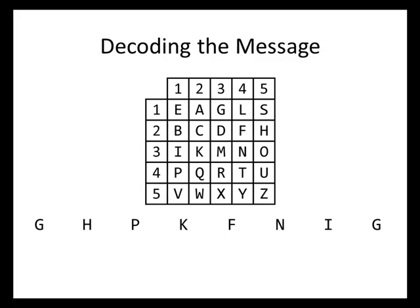So we'll write our encoded message underneath the polybius square, g-h-p-k-f-n-i-g. And what we'll do is we'll look up each of these letters in our square. So where is the letter g? Well, the letter g is in row 1, column 3. And so what we do, since we're decoding a message, is we're going to write that pair of numbers horizontally, so 1 and then a 3 sitting right next to it.